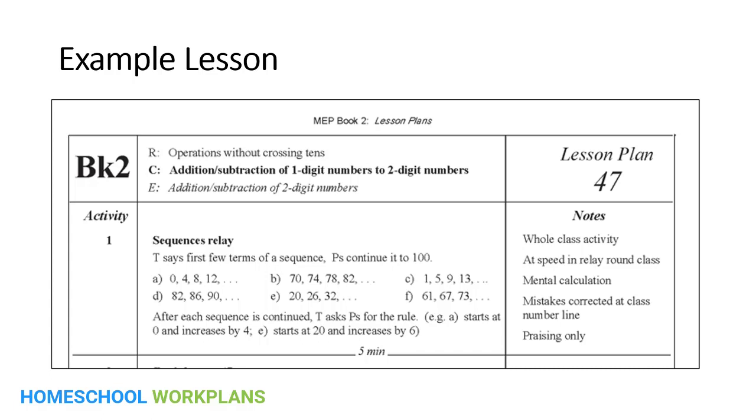For this activity you're going to be doing sequences relays. T says first few terms of a sequence. So t refers to you the teacher and then the p or ps refers to pupil or pupils. So what you'll be doing as a teacher is saying the first few terms of the sequence that are listed here and then your student will continue the sequence up to 100. This is what U.S. curriculums call skip counting practice and it lays the groundwork for learning multiplication. In this example you will say 0 4 8 12 and your student will continue the numbers up to 100. So 16 20 24 and so on. The instructions say that after each sequence is completed you should ask the student to tell you what the rule is for the sequence. So in this case the rule is that it started at zero and increased by four.